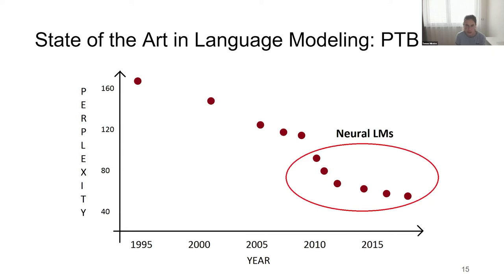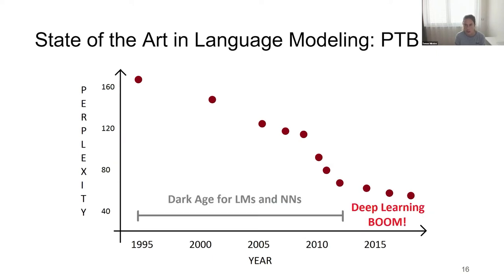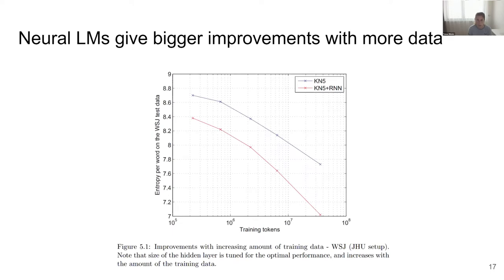I plotted the best results over the years on the Penn Treebank dataset. Perplexity improvements were already stagnating before 2010, but with the introduction of neural networks it got much better for a while. Then there was again a plateau, which I find funny — after neural networks started working, there was a huge switch to them, but improvements became more incremental. I think we still need to wait for another revolution, the way n-grams were beaten before.